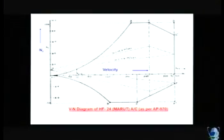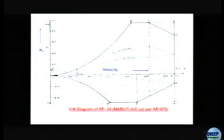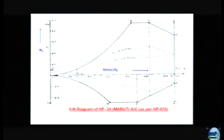Here is a V-N diagram for an actual aircraft called the HF-24 Marut, one of India's most outstanding aircraft, designed in the mid-1960s. This was a transonic aircraft — you can look it up on the internet. Notice that on the y-axis we have Nz and on the x-axis we have V. The maximum value of Nz is 9.34. Each of these lines has specific significance, and by the end of today's presentation, you will be able to appreciate the meaning conveyed by all these lines. Such a diagram is made available for every aircraft that is designed.